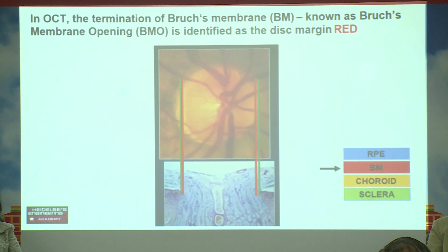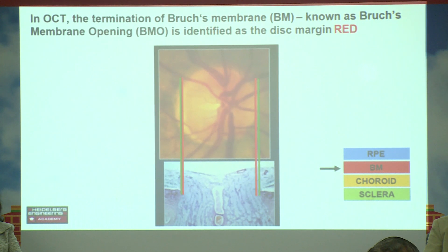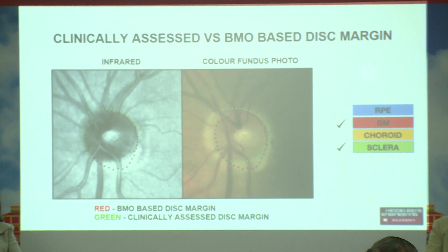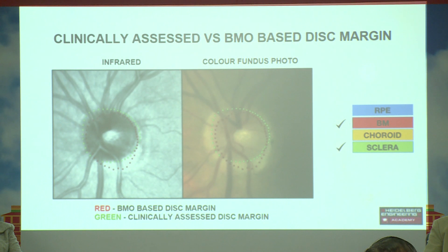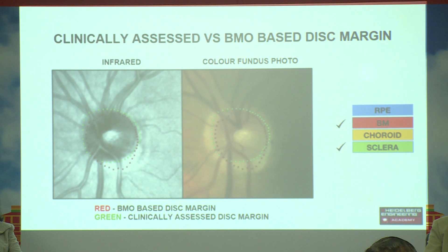Previously the sclera was clinically thought of as the real margin, but then the termination of the Bruch's membrane is now thought to be the real margin. Both are not the same — there is a slight difference between the two anatomical structures. As you can see, the green dotted lines depict the scleral area in the color fundus photograph, while the red dotted area represents the Bruch's membrane opening-based disc margin, giving a different area.